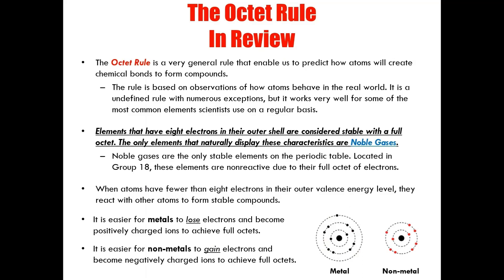For non-metals, it is much easier to gain electrons and become negatively charged ions to achieve full octets. For this non-metal, you have seven electrons in its outermost energy level, and so obviously it makes sense to gain one electron. Let's see this in action. This metal wants to lose one electron, and so this non-metal will gain it. You can see that the non-metal has gained the one electron and the metal has lost that empty outer orbital.